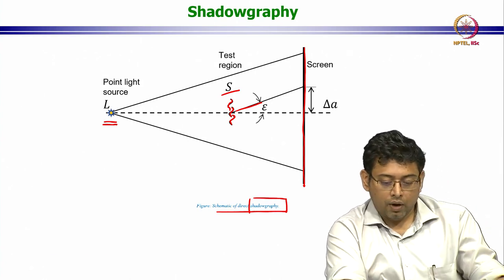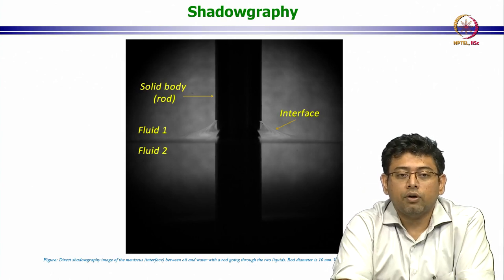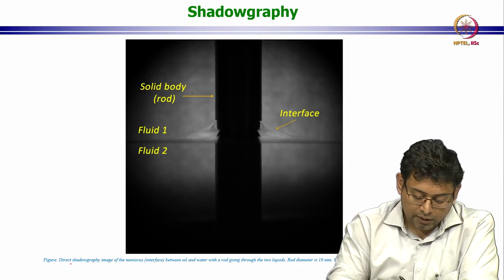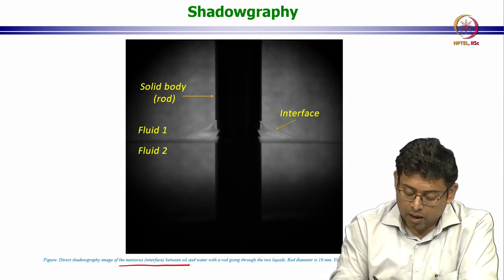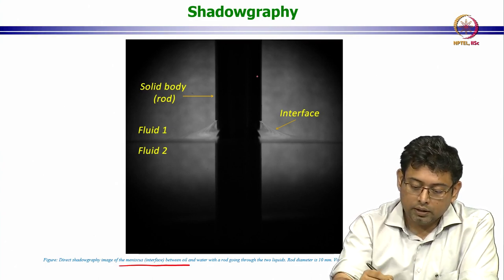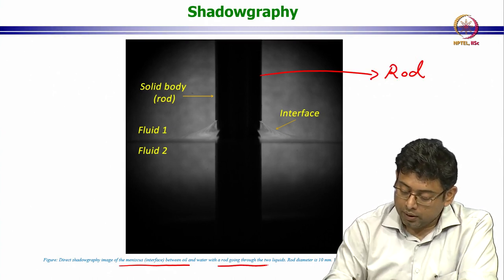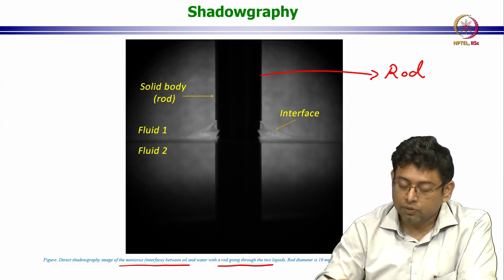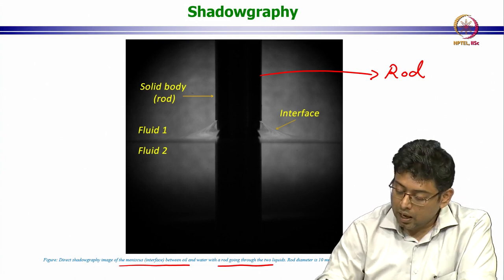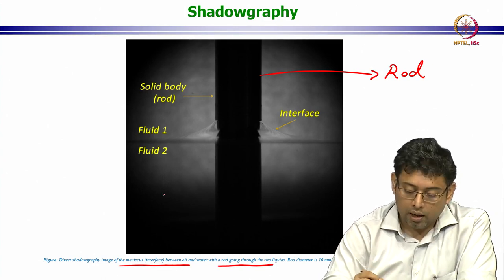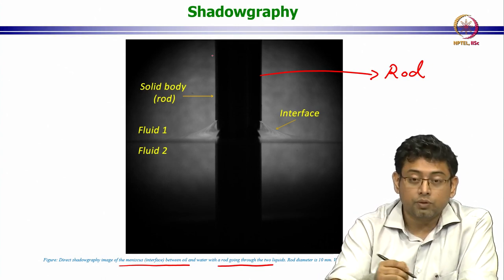This is an example of a shadowgraphy that we have done in our lab. This is a direct shadowgraphy image of a meniscus between oil and water, and this is a rod that is going right through the two liquids. The rod diameter is 10 mm, just for a sense of the scale. This visualization from our lab was being done for understanding a particular phenomenon called the rod climbing effect.